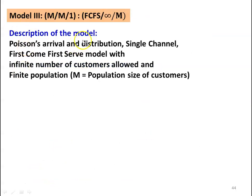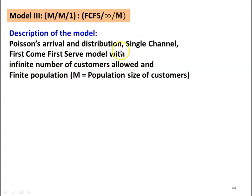Model Number 3 is M/M/1 : FCFS/∞/M. This is Poisson arrival and Poisson service; 1 stands for single channel. FCFS stands for first come first serve with an infinite number of customers allowed. The first infinity stands for infinite number of customers, and M is the finite population size — the total number of customers in that area.